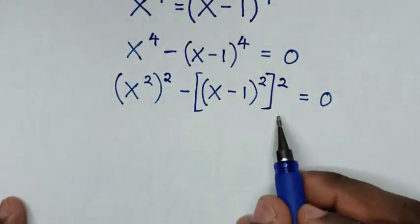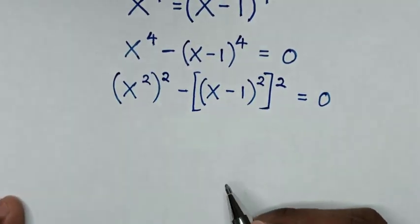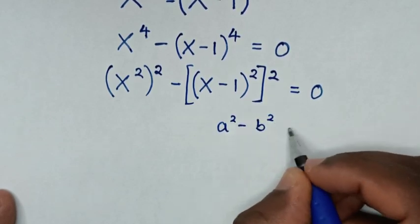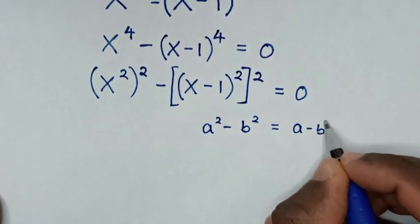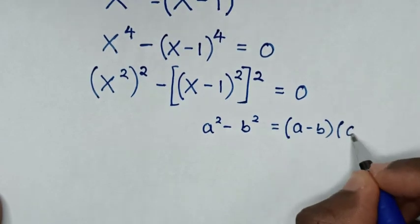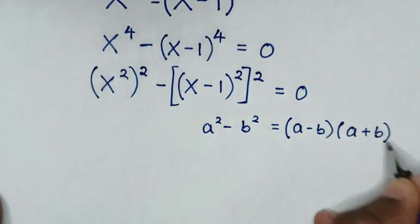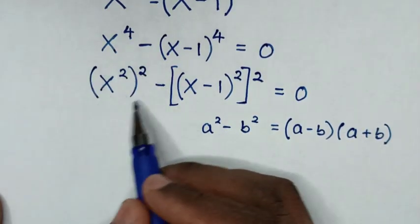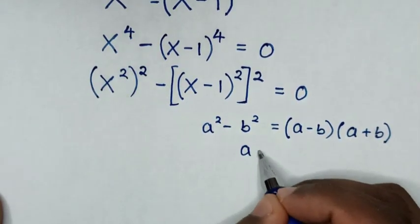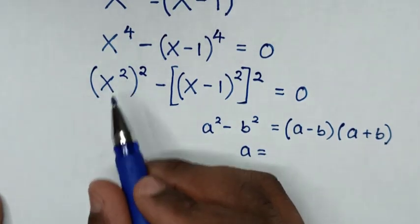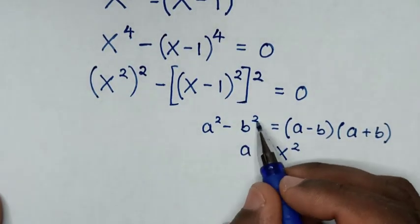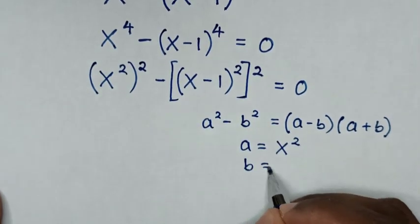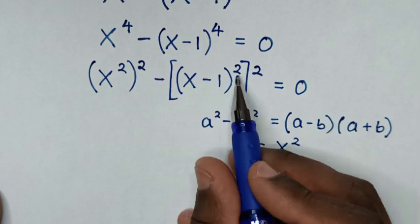This equation is in the form of a difference of squares. We apply the rule: a squared minus b squared equals (a minus b)(a plus b). Comparing, a equals x squared and b equals (x minus 1) squared.